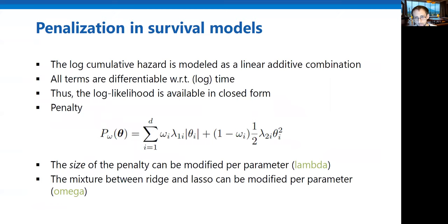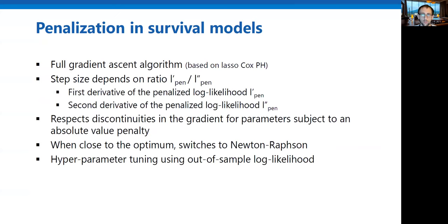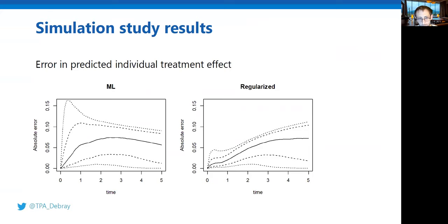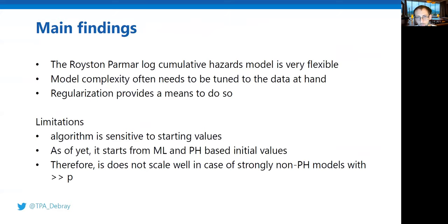Some technical details I'll skip for time, but we did simulations comparing Royston-Parmar models with Cox regression models with and without penalization. The general finding is that penalization helps, especially with small datasets and complex models with interactions. The main advantage of Royston-Parmar models is their flexibility — they can model complex outcomes and allow for non-proportional hazards through interaction terms. With penalization in the estimation, allowing for non-proportional hazards becomes much easier.